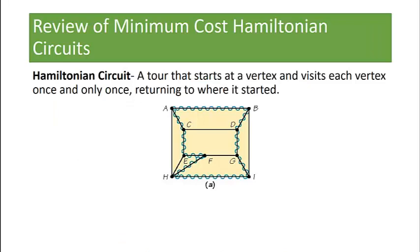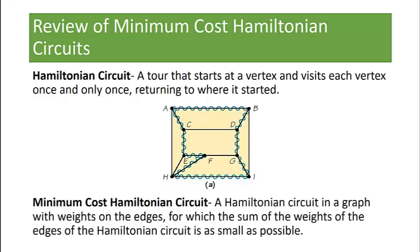Recall that a Hamiltonian circuit is a tour that starts at a vertex and visits each vertex once and only once before returning to where it started. A minimum cost Hamiltonian circuit is a Hamiltonian circuit in a graph with weights on the edges for which the sum of the weights of the edges is as small as possible.